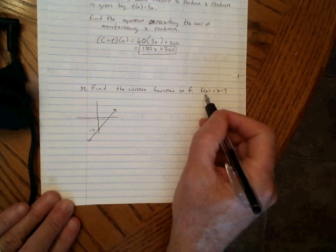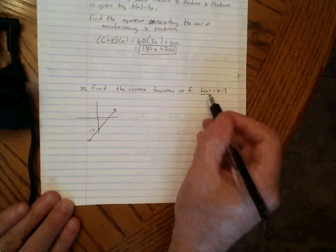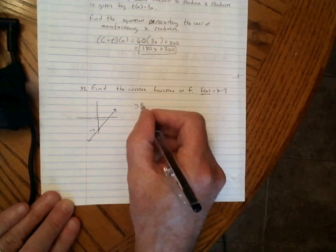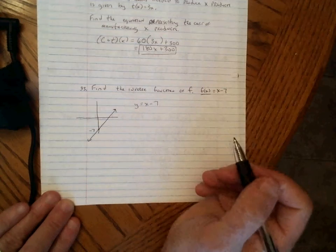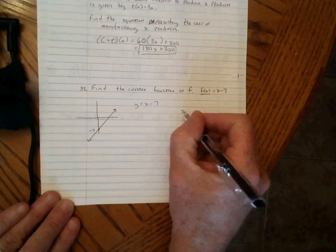To find its inverse, we have to notice that F of X is also Y. I'm going to write this as Y equals X minus 7.